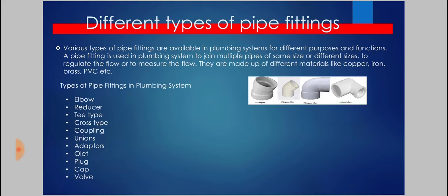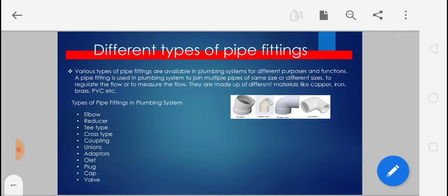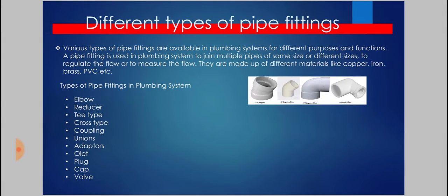Various types of pipe fittings are available in plumbing systems for different purposes and functions. A pipe fitting is used in plumbing systems to join multiple pipes of the same or different sizes, to regulate the flow, or to measure the flow. They are made up of different materials like copper, iron, brass, PVC, etc. Most popularly we use PVC pipes because they are more durable and corrosion resistant.